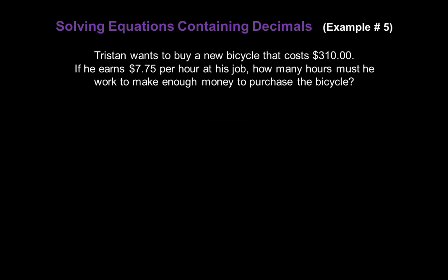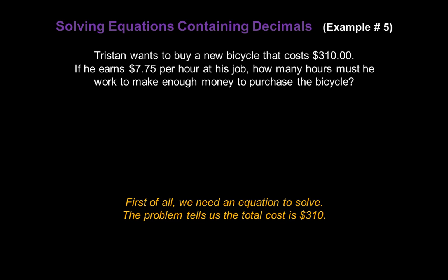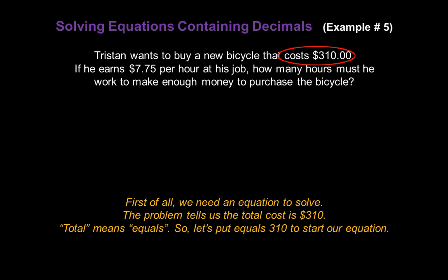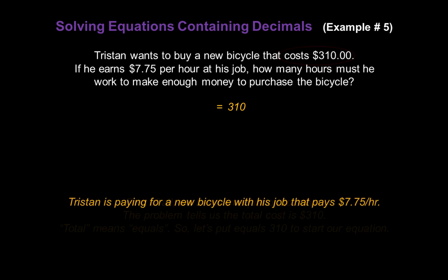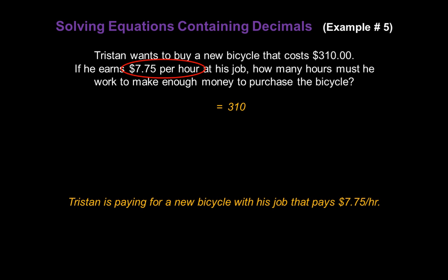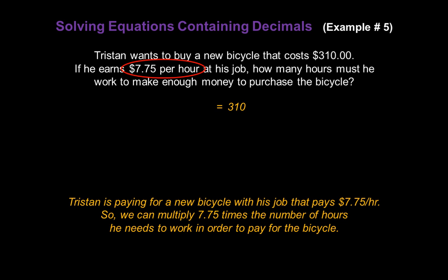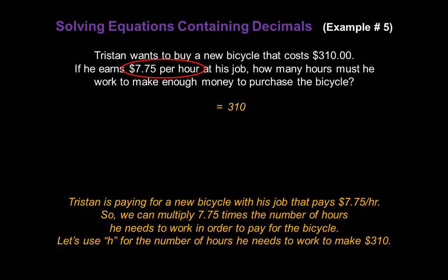Now let's finish up the lesson with a word problem. Tristan wants to buy a new bicycle that costs $310. If he earns $7.75 per hour at his job, how many hours must he work to make enough money to purchase the bicycle? First, we need an equation to solve. The problem tells us the total cost is $310 — and in math, total means equals — so we can start creating our equation by putting down equals 310. Tristan is paying with his job that pays $7.75 each hour. So we multiply 7.75 times the number of hours he needs to work, which we'll call H. So the equation is 7.75H equals 310.